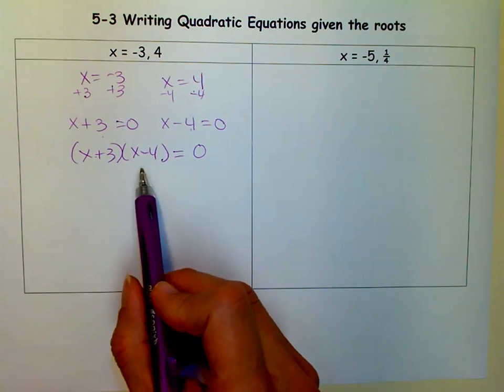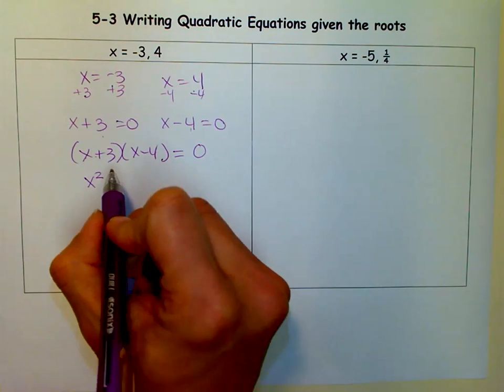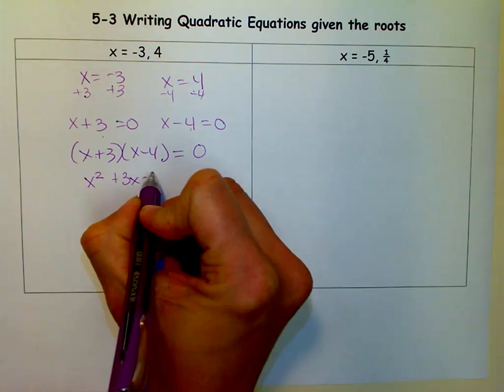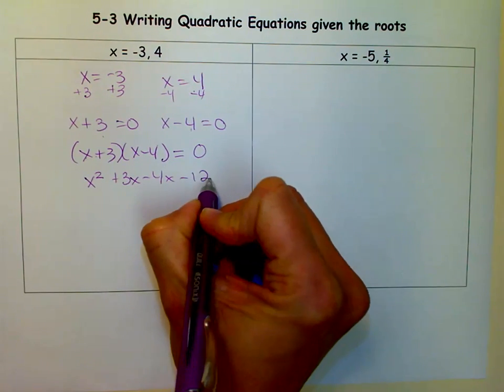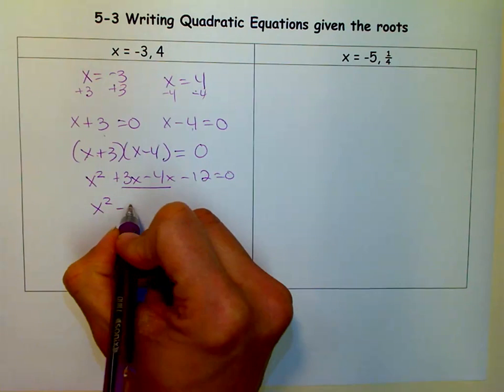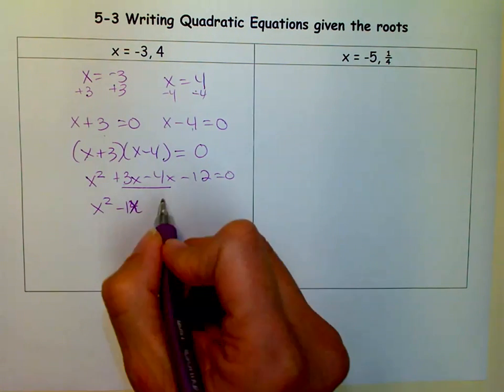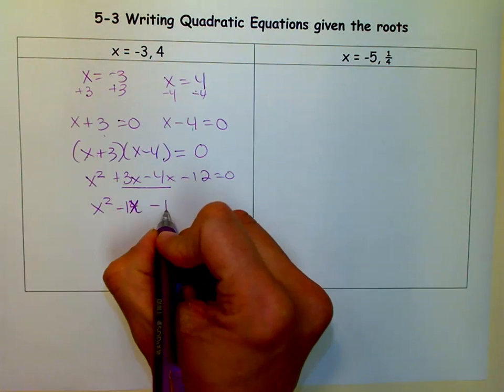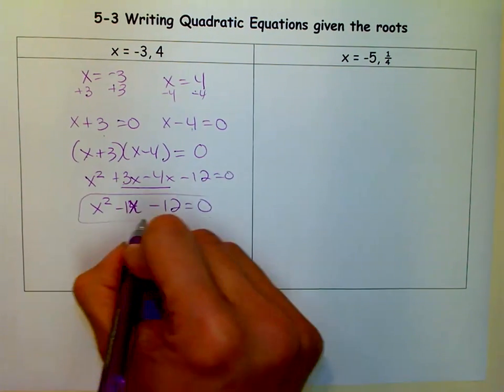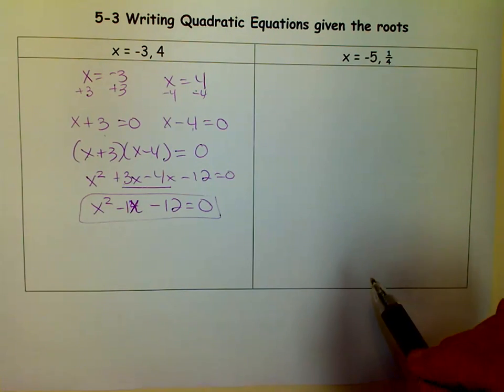Now we just need to use FOIL. The first is x squared. And I get plus 3x minus 4x minus 12 equals 0. But these are combinable. So I get x squared minus 1x, negative x minus 12. So here is a quadratic equation that has the roots negative 3 and positive 4.